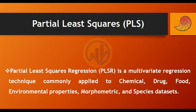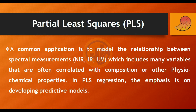Partial Least Square is a multivariate regression technique commonly applied to the chemical field, drug field, food field, environmental properties, and morphometric and species data sets. A common application is to model the relationship between spectral measurements — such as NIR, IR, and UV — which include many variables that are often correlated.